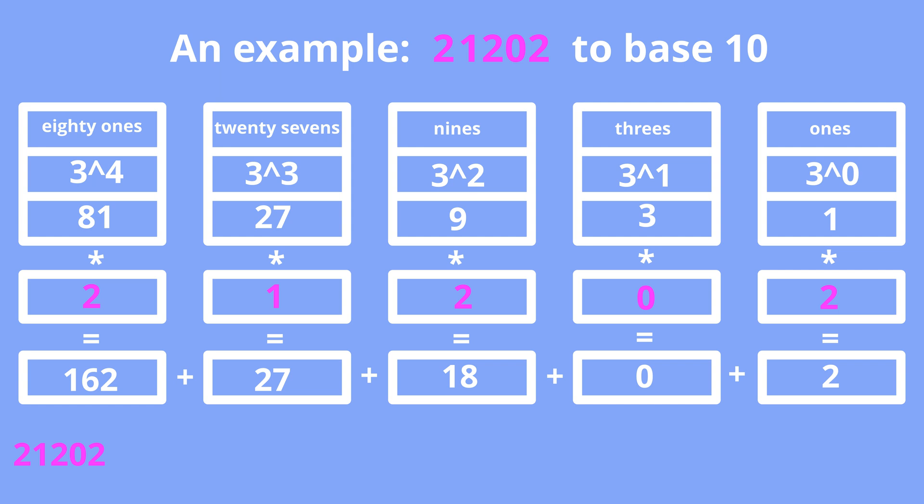So 21202 equals 2 times 81 plus 1 times 27 plus 2 times 9 plus 0 times 3 plus 2 times 1 and equals 209.